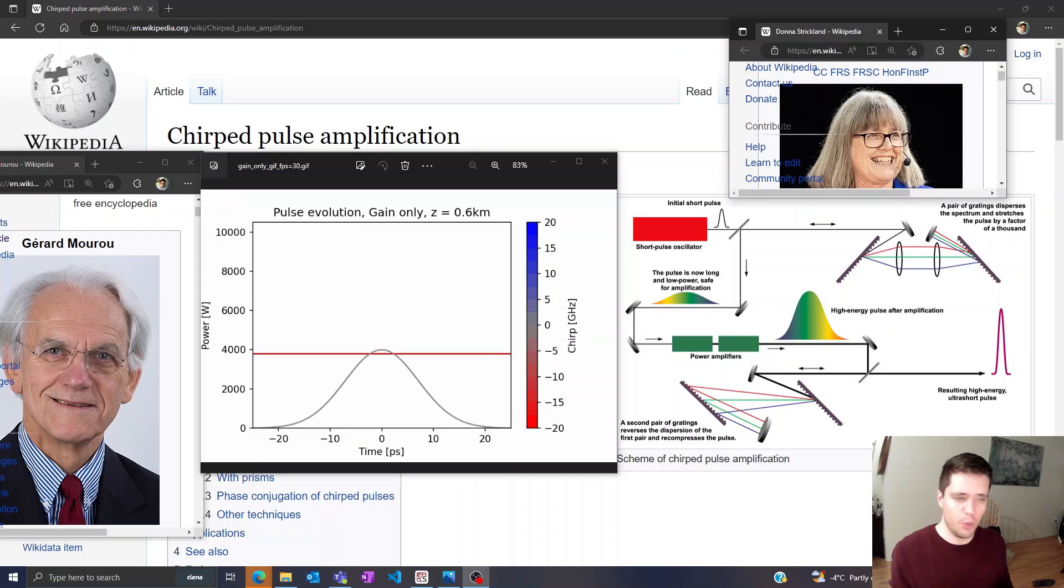This technique was originally developed in the mid-1980s by Gerard Moreau and Donna Strickland in order to generate high power optical pulses. In 2018 they actually won the Nobel Prize in Physics for this technique, so I thought it'd be interesting to understand theoretically why it works and also understand why it's Nobel Prize worthy, so to speak.